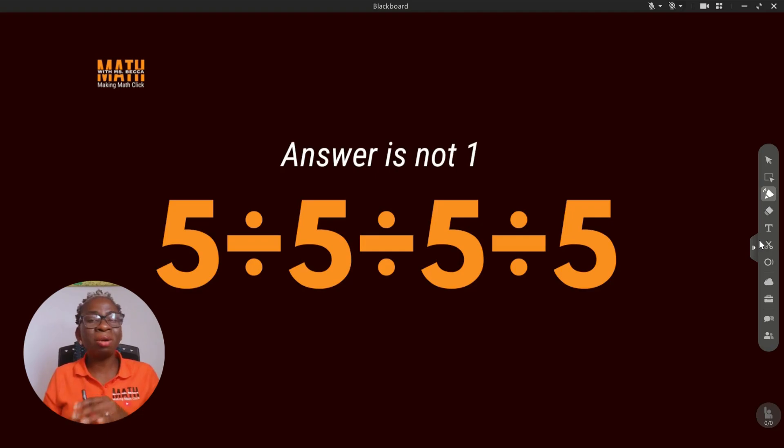So what is the right way to solve this question? The right way is to solve from left to right. Now let's take it one after the other. Let's first take 5 divided by 5. 5 divided by 5 will give 1.